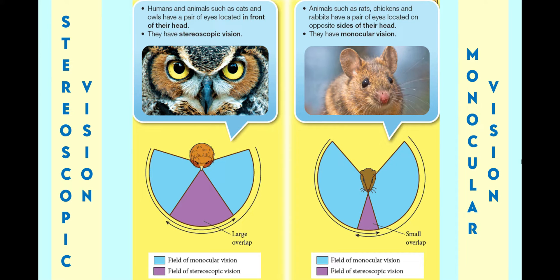Meanwhile, animals such as rats, chickens, and rabbits have a pair of eyes located on opposite sides of the head; therefore they have monocular vision.